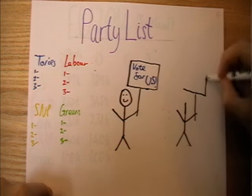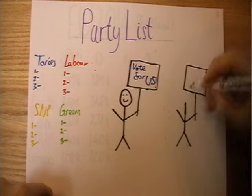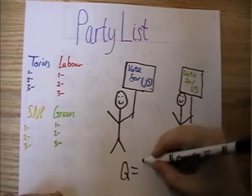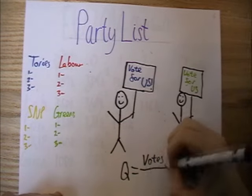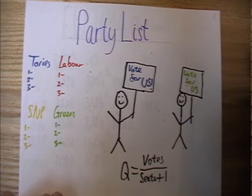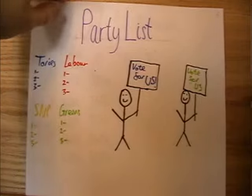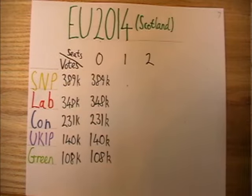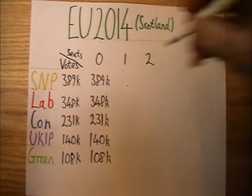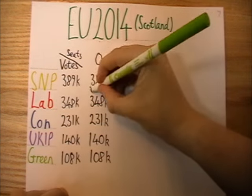More specifically, the D'Hondt method is used to distribute the seats. This involves creating a quotient, which is equal to the votes the party received divided by the seats they've already won, plus one. Let's do a quick example using the European elections of 2014 for the Scotland region. Here are all the votes each party received. Nobody has any seats yet, so the quotient is just the number of votes received.